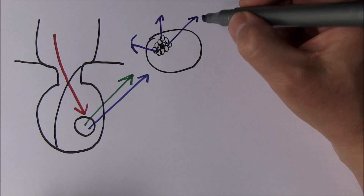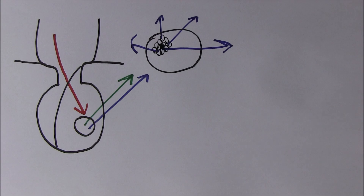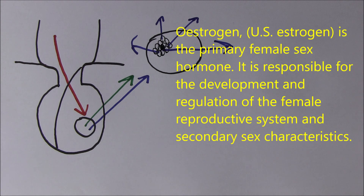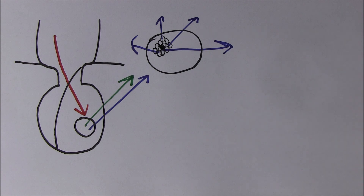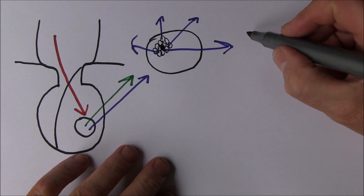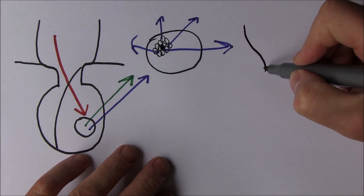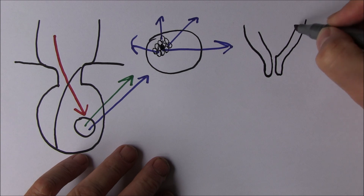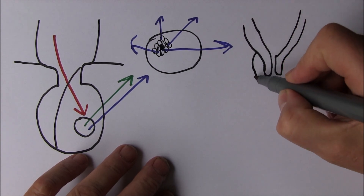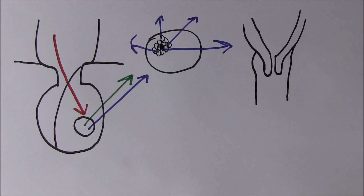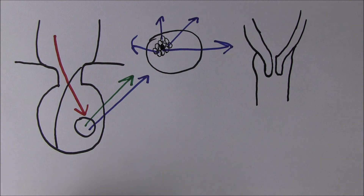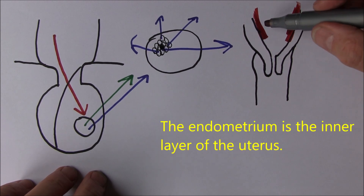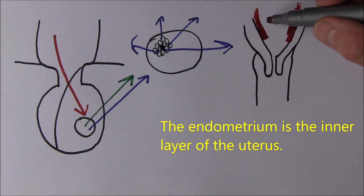The granulosa cells, when stimulated by follicle stimulating hormone, start producing oestrogen, which is released into the blood and circulates around the body. It's this oestrogen which starts stimulating the female secondary and primary sexual characteristics. Oestrogen causes development of the female genitalia — internal and external — including the uterus, cervix and vagina. Oestrogen also stimulates development of the endometrium, particularly during the first half of the menstrual cycle.